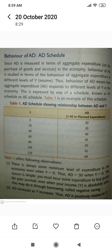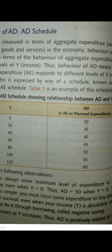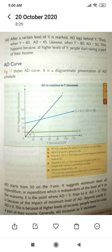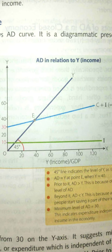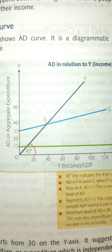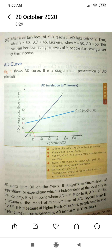When income is 60 and AD is 45, the difference of 15 rupees is saving. This is why AD lags behind income at higher income levels. The AD curve is upward sloping because we are discussing it in terms of income of the people. AD equals C plus I, where I is investment, which we keep constant for now.